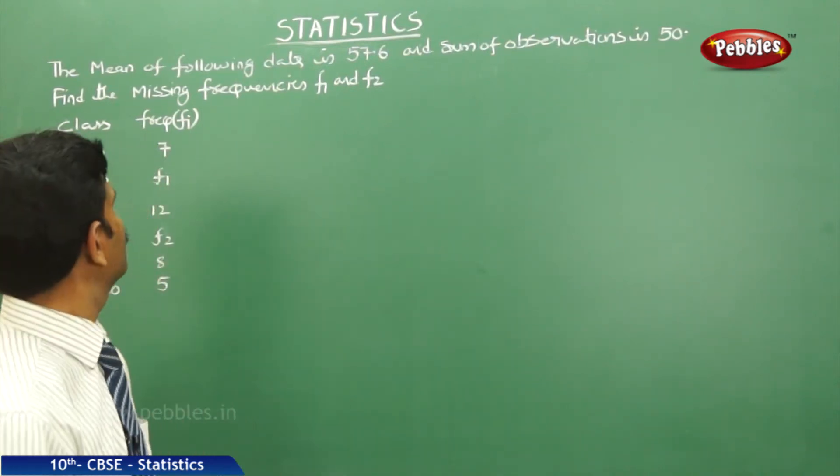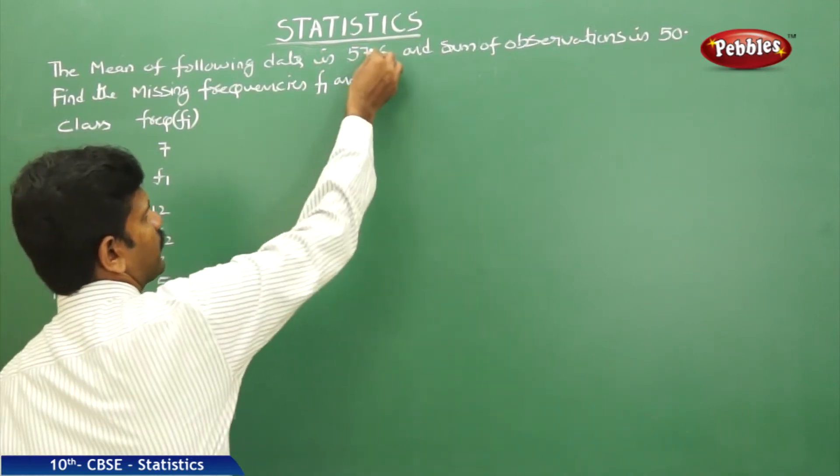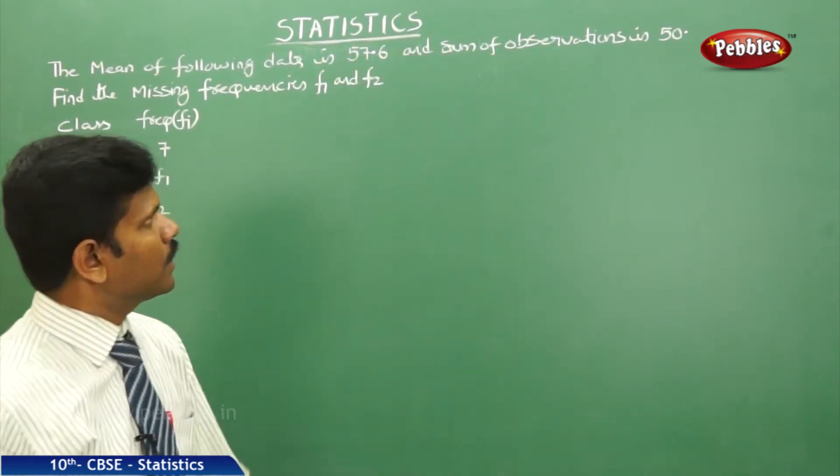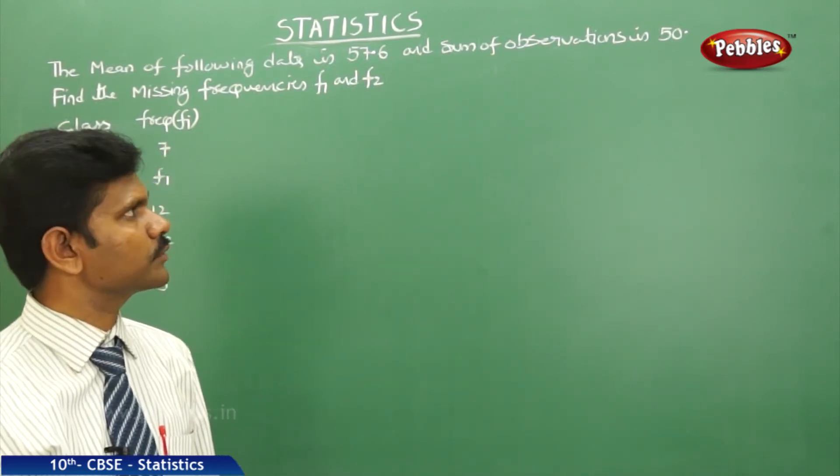See our next problem. The mean of the following data is 57.6 and the sum of observations is 50. Sum of observations is 50 means capital N is equal to 50.